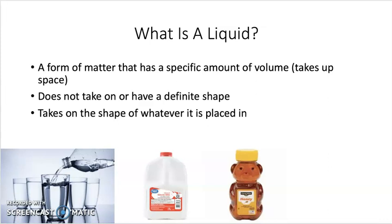What is a liquid? A liquid is a form of matter that has a specific amount of volume, which means a specific amount of space that it takes up. It does not have a definite shape, and it takes on the shape of whatever it is placed in. For example, if you look at the picture below, you will see water being poured into a glass — the water takes on the shape of the glass. Other liquids include milk and honey.